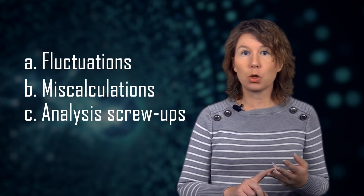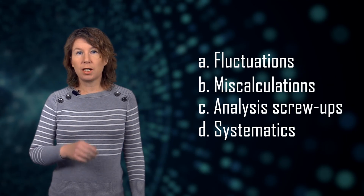And then of course there are possible issues with the data analysis. There are various tricks you can play to increase the supposed significance — this basically doesn't happen in collaboration papers, but you sometimes see individual researchers using very creative methods of analysis. There may also be systematic problems with the detection triggers or filters. In summary, possible reasons why a discovery might disappear are: (a) fluctuations, (b) miscalculations, (c) analysis screw-ups, and (d) systematics. The most frequent, just by looking at the history, are fluctuations.